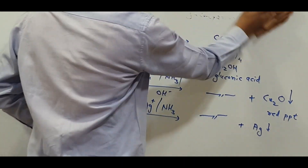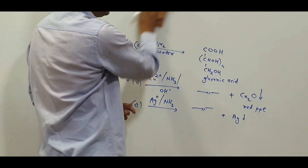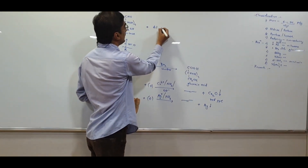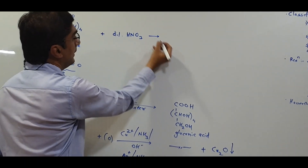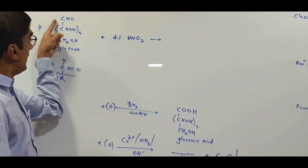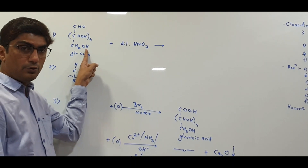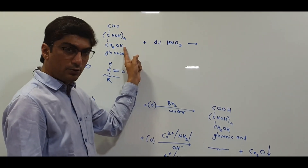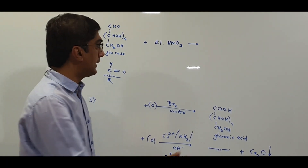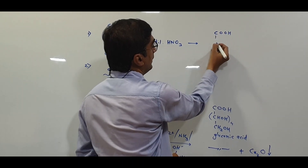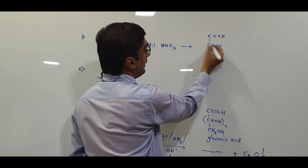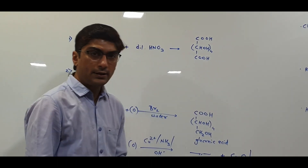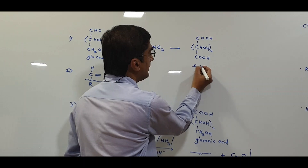But if we react this glucose molecule with a strong oxidizing agent, for example dilute HNO3, then it can oxidize the aldehyde group as well as the primary alcohol group, but it will not oxidize any of the secondary alcohol groups. So the aldehyde and primary alcohol are both oxidized to COOH, while the remaining 4 secondary alcohol groups remain as they were. This product is called saccharic acid.